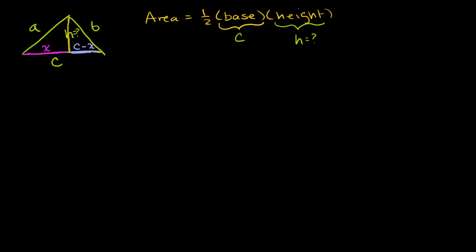Since these are both right angles — because this is the height — I can set up two Pythagorean theorem equations. From the left-hand triangle: x squared plus h squared is equal to a squared. And from the right-hand triangle: c minus x squared plus h squared is equal to b squared. I'm assuming I know a, b, and c, so I have two equations with two unknowns: x and h. And h is what we're trying to figure out, because if we know h, we can apply the area formula.